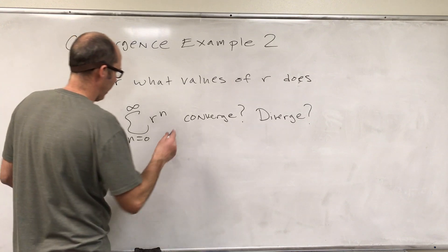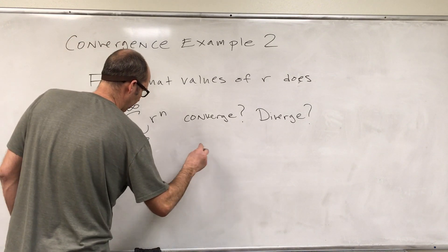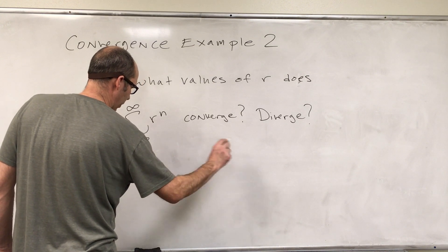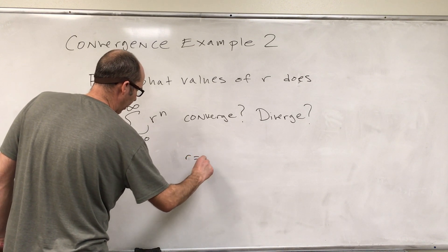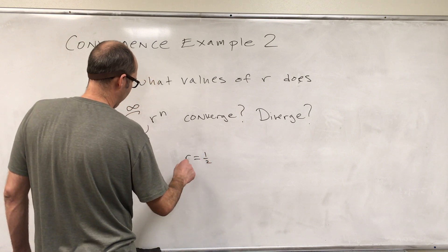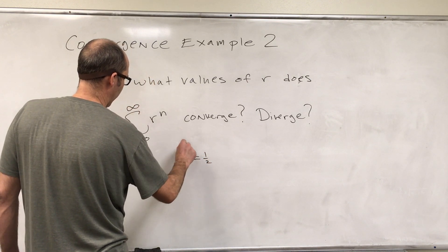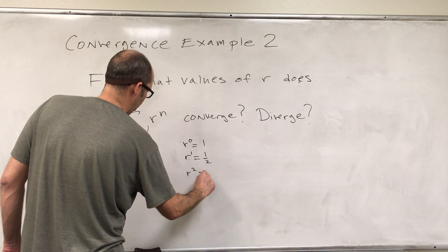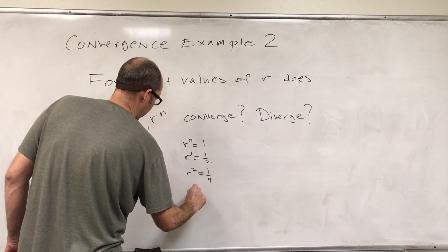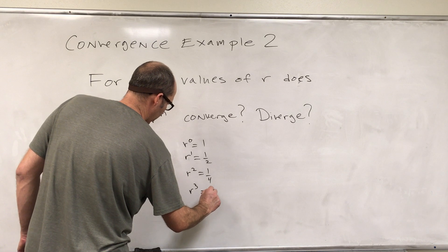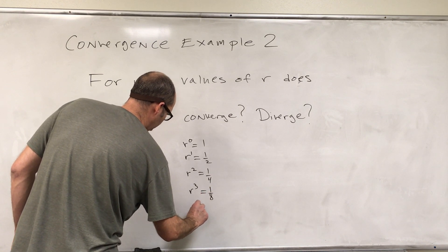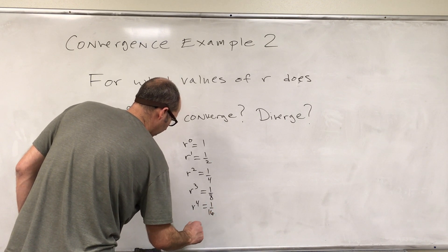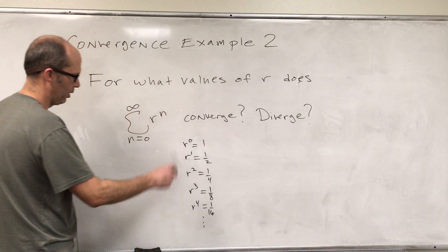Now before I actually get into that, I just want to have you consider a couple of examples. Let's say that R is a half, so R to the 1 equals a half, so R to the 0 is 1. R squared is a fourth, R cubed is an eighth, R to the fourth is a sixteenth. You can see that it's getting smaller.